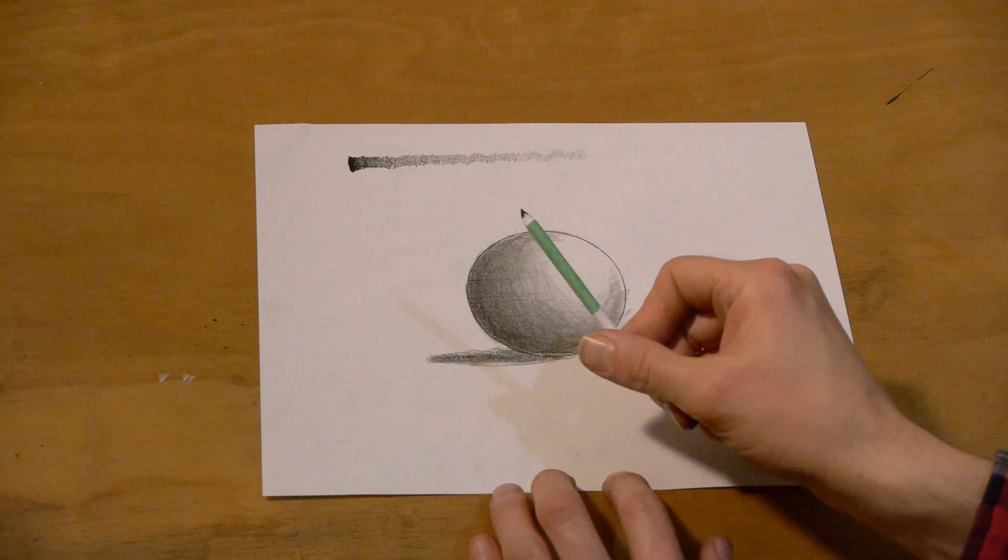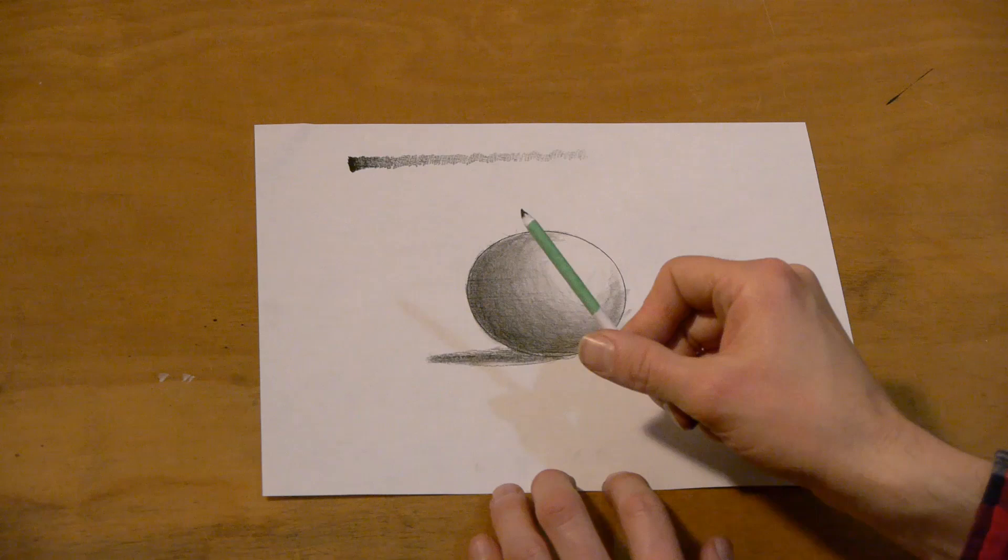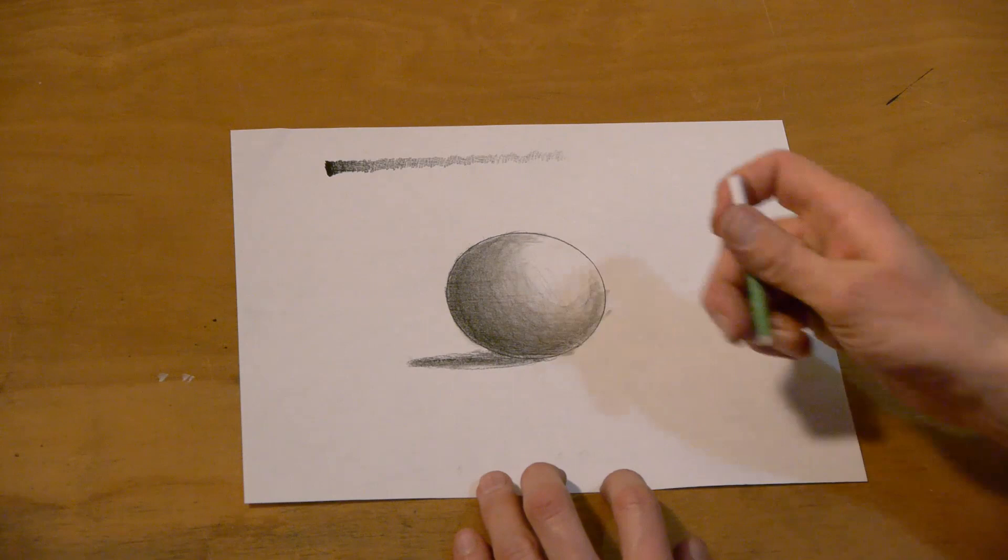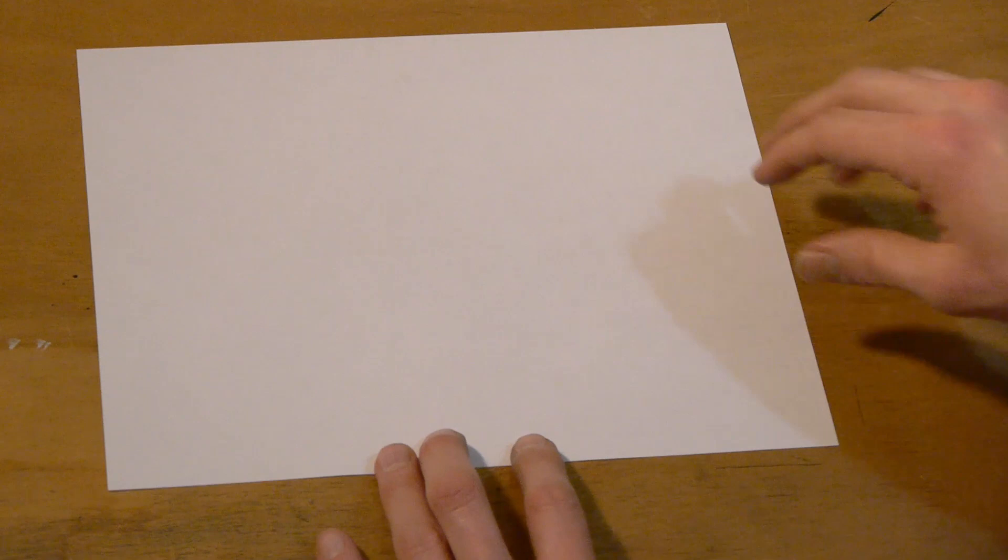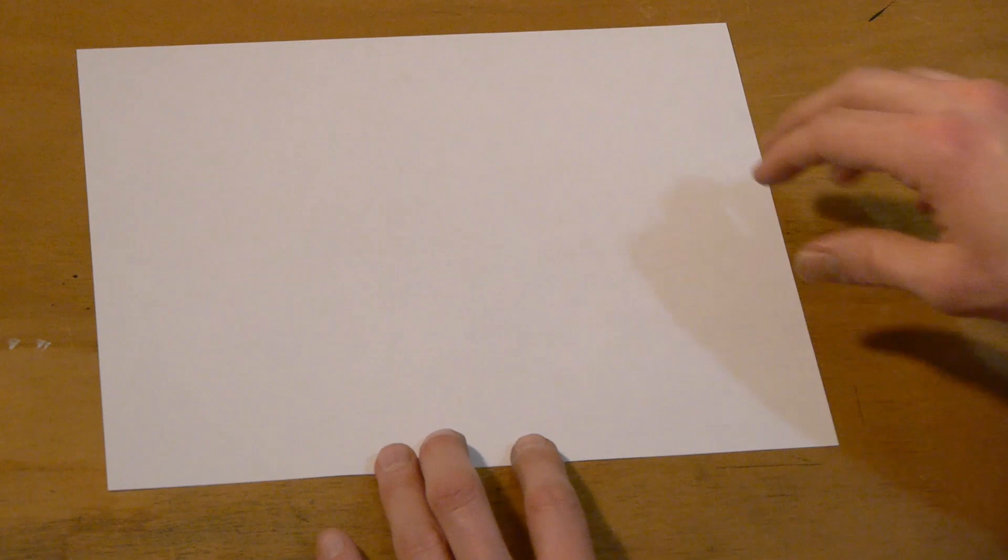Now, the thing I'm going to do next is show you how to make one of these blending stubs so that you too can blend your shading together and make it look nice and smooth. Blending stub. So we're going to use a piece of paper again. You're going to need some tape. It can be any kind of tape. It can be masking tape. It can be scotch tape, the clear tape. It doesn't really matter. It could be duct tape if you want, whatever you got. And also you're going to need some pair of scissors.